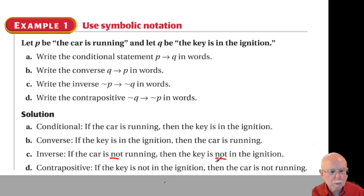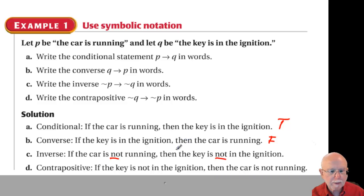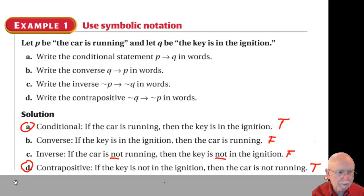If I assume a car where the key has to be in the ignition to start it, then the conditional 'if the car is running, then the key is in the ignition' is true. The converse, 'if the key is in the ignition, then the car is running,' is not necessarily true — I may have put the key in but not started it, so that's false. The inverse is also false for the same reason. The contrapositive, 'if the key is not in the ignition, then the car is not running,' is true. The conditional and contrapositive will always have the same truth value.